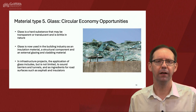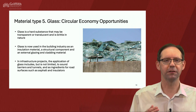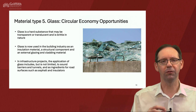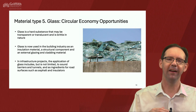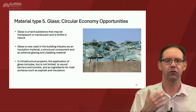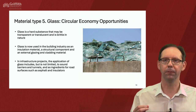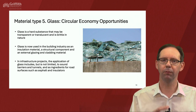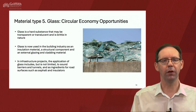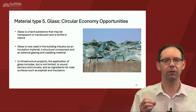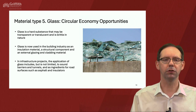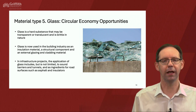Fifth, glass. Naturally, glass is a hard substance that may be transparent, translucent and brittle in nature, often or primarily used for windows, but can actually be used in other ways — thinking of it used as an insulation material, structural component, and external glazing and cladding material. It's worth thinking through which more sustainable materials can be used alternatively. In infrastructure projects, applications for glass include, but are not limited to, sound barriers and tunnels, and as ingredients for road surfaces such as asphalt and insulators, for a more sustainable outcome.